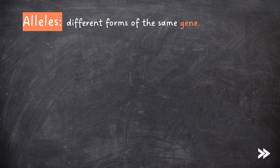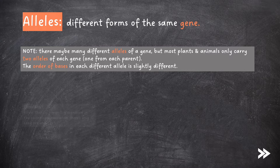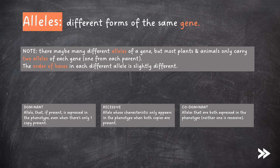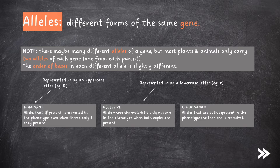Next, we need to know about alleles. Alleles are different forms of the same gene. Note that there may be many different alleles of a gene, but most plants and animals only carry two alleles of each gene, one from each parent. The order of bases in each different allele is slightly different. Alleles may be dominant, recessive or codominant. A dominant allele is one that, if present, is expressed in the phenotype even when there's only one copy present. A recessive allele is one whose characteristic only appears in the phenotype when both copies are present. Codominant alleles are ones that are both expressed in the phenotype — neither one is recessive.